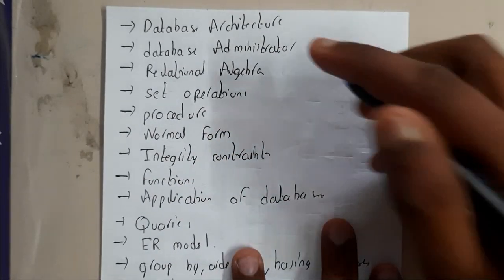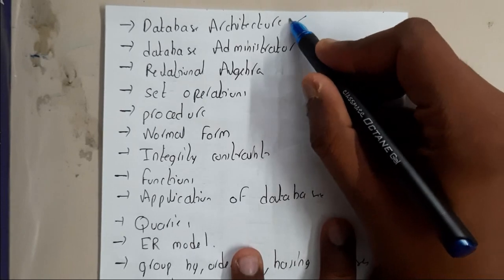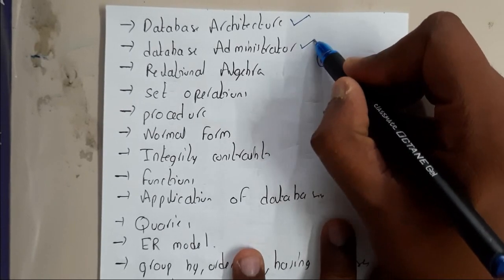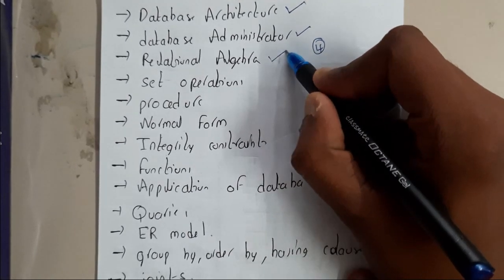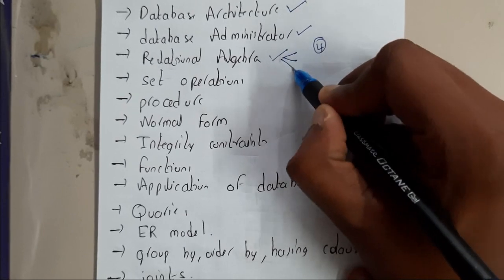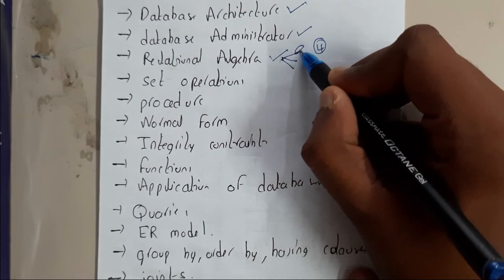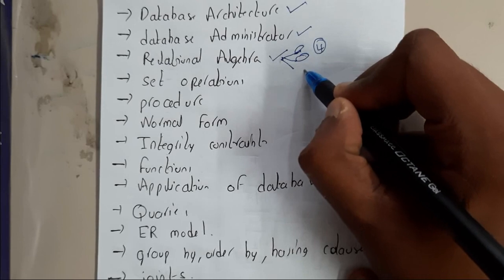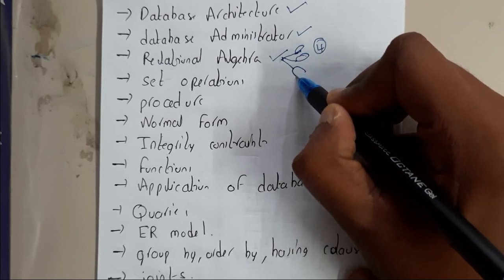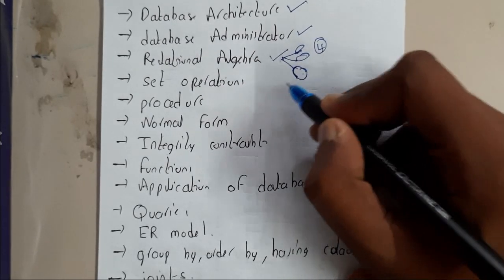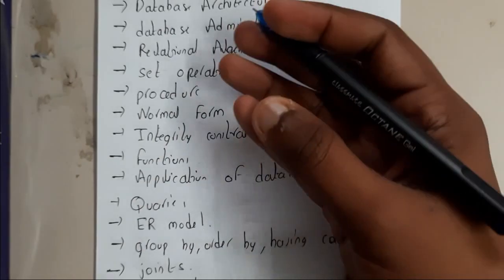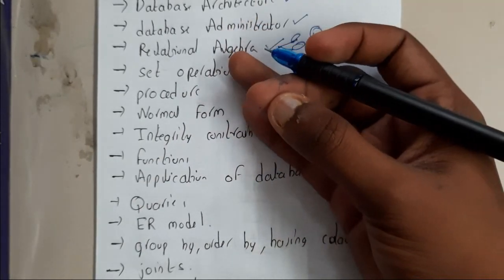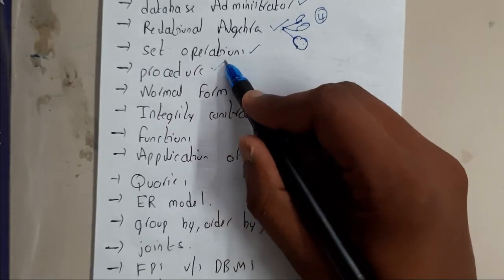Database architecture is repeated the most, along with database administrator and relational algebra. He asked about three to four things like selecting, projecting, or doing any kind of operations. He also asked about set operations like union, intersection, and minus, and asked us to write procedures with examples.